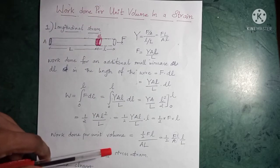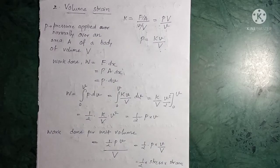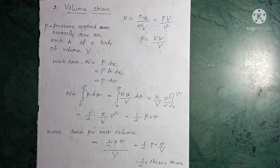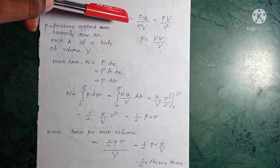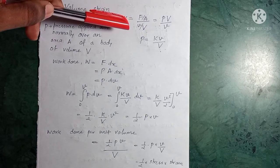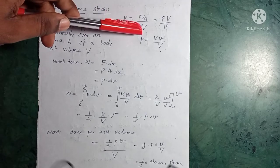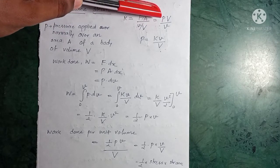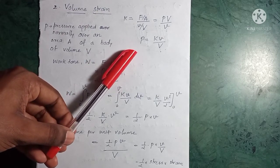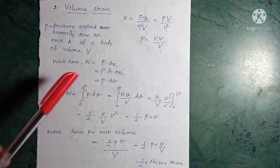Next, we consider the volume strain case. We take a body of volume capital V and apply pressure normally over an area A. The bulk modulus K can be written as stress by strain, which is (F/A) divided by (v/V), where small v is the decrease in volume and capital V is the original volume. Since force divided by area is pressure, pressure can be written as K × v/V.